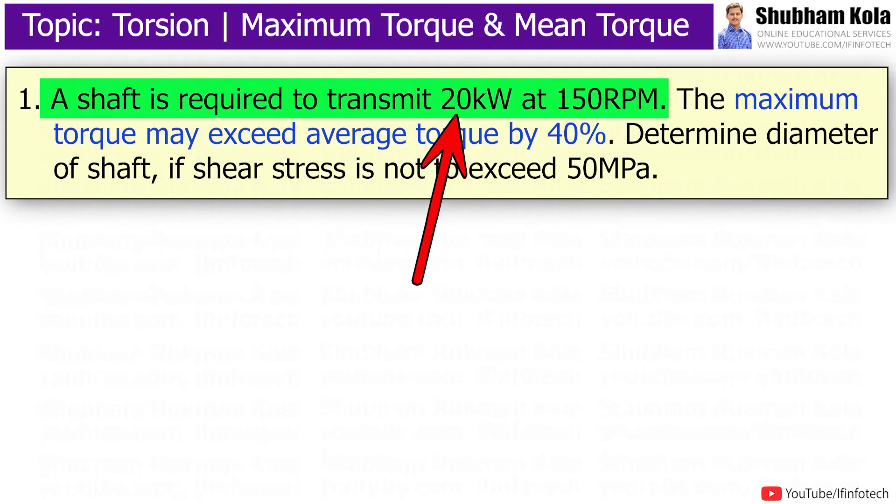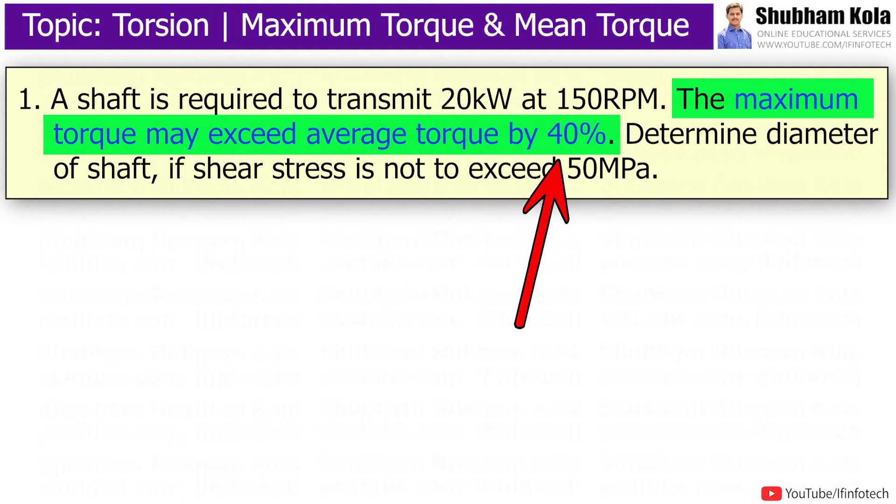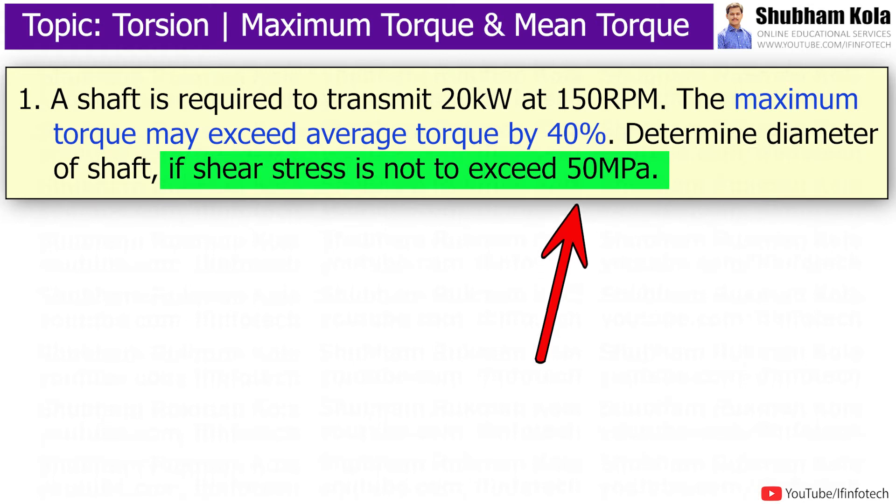A shaft is required to transmit 20kW power at speed 150rpm. The maximum torque may exceed average torque by 40%. Determine diameter of shaft if shear stress is not to exceed 50 MPa.